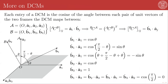Direction cosine matrices are called direction cosine matrices because every entry of the matrix represents the dot product between pairs of the unit directions defining the two frames being mapped between. The i-th j-th element of the DCM ACB is equivalent to A-hat-i dotted into B-hat-j, and the i-th j-th element of BCA — which is the transpose of ACB — is B-hat-i dotted into A-hat-j. Since both vectors are unit vectors, the dot product gives the cosine of the angle between them — hence direction cosine matrices.